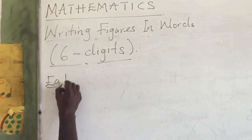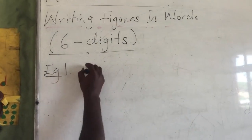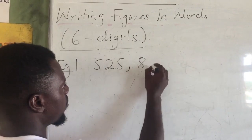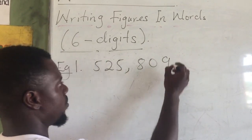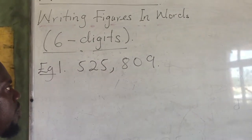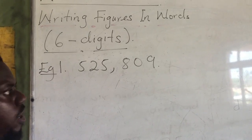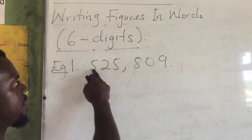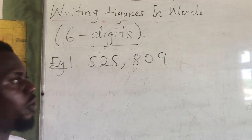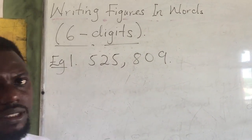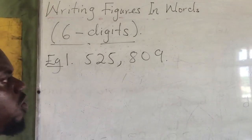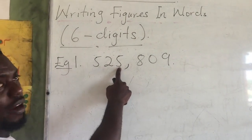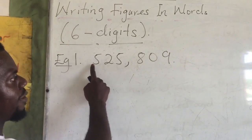Example 1. Let's begin by counting the digits that we have on the board: 1, 2, 3, 4, 5, 6 — 6 digits. We are going to write these 6-digit figures in words. You did it for 4, 5, and 6 digits before.